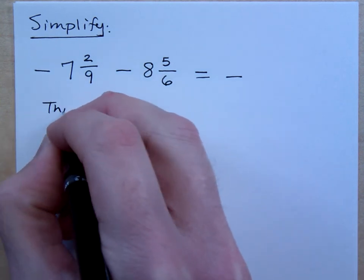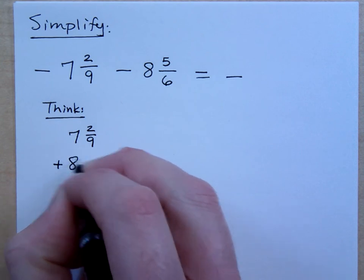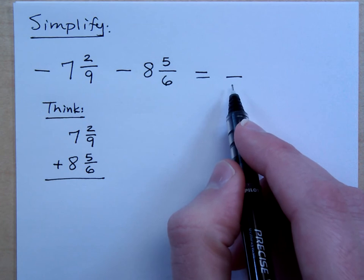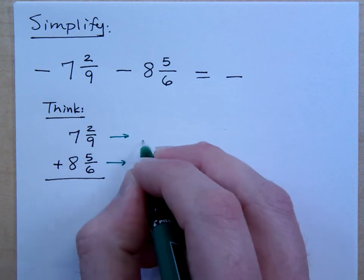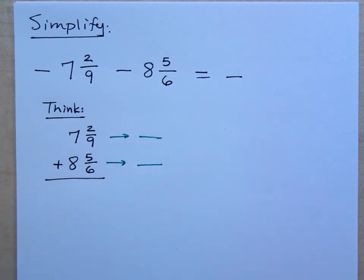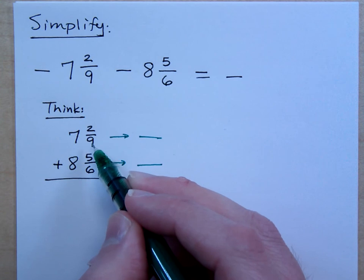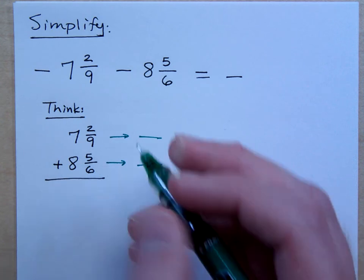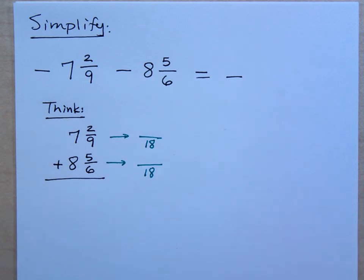I need to think about doing 7 and 2 ninths plus 8 and 5 sixths, knowing that I'm basically adding two losses, so I'm going to have a larger loss represented by the negative sign. What's the common denominator for 9 and 6? You can use 36, but that is not the LCD. Look at your multiples for 9. Does 6 go into 9? No. The next multiple of 9 is 18. Does 6 go into 18? Then let that be your common denominator. Would 36 work? Yes, but you would have reducing to do at the end. Guaranteed.